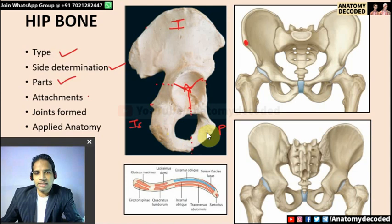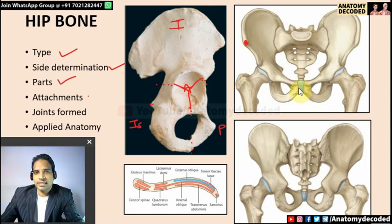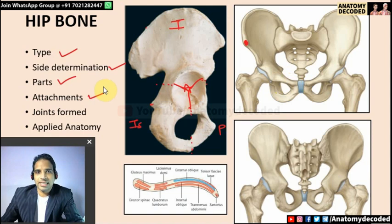The ischial pubic ramus connects the ischium and pubis. The pubis articulates with the pubis of the opposite side in the midline — this is a secondary cartilaginous joint also called symphysis pubis. In the pubis there is a line referred to as the pectineal line.